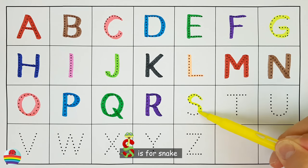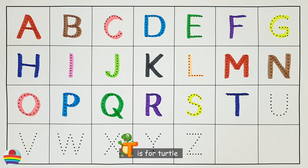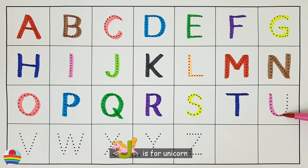S. S is for Snake. T. T is for Turtle. U. U is for Unicorn.